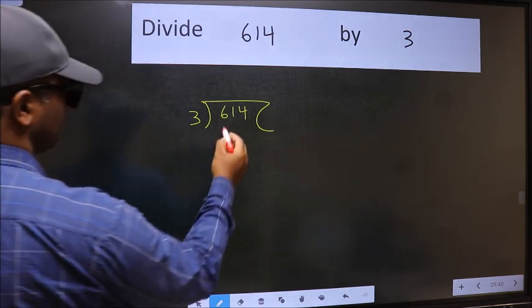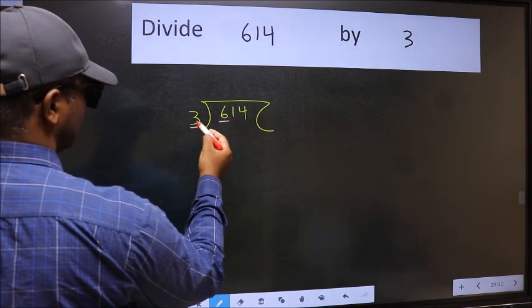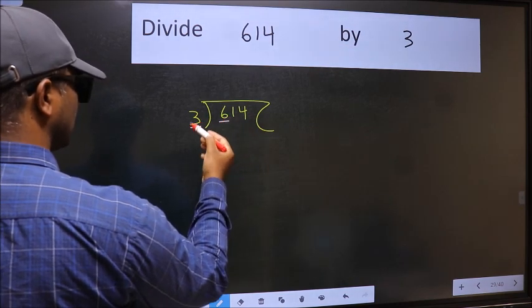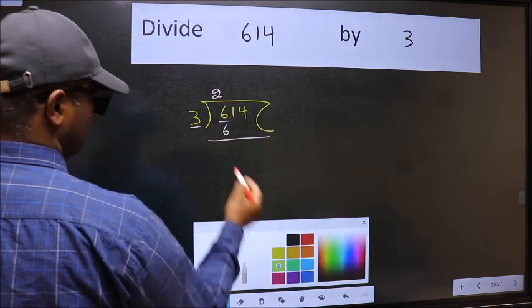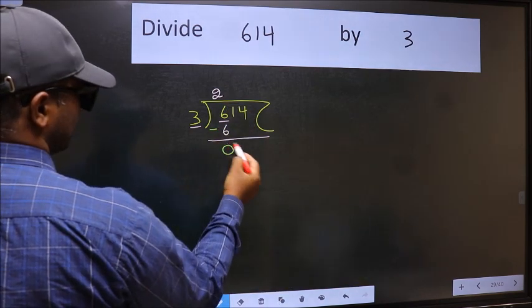Next, here we have 6 and here 3. When do we get 6 in the 3 table? 3 2's, 6. Now we should subtract. We get 0.